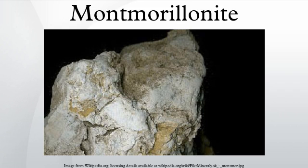Montmorillonite is a very soft phyllosilicate group of minerals that typically form in microscopic crystals, forming a clay. It is named after Montmorillon in France. Montmorillonite, a member of the smectite group, is a 2-1 clay, meaning that it has two tetrahedral sheets sandwiching a central octahedral sheet. The particles are plate-shaped with an average diameter of approximately 1 micrometer. Members of this group include Saponite.